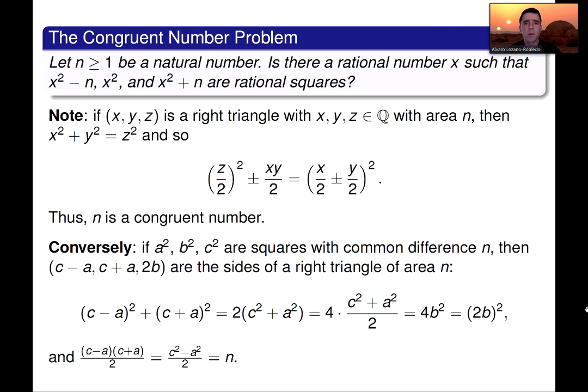More recently, though, we know the congruent number problem is a problem related to triangles, to right triangles, more precisely. And I just have this slide. I'm not going to go through it. But what it says is that if you have an arithmetic progression of three rational squares, then the common difference is a congruent number, and vice versa. So the common difference is what we define to be a congruent number, but you can construct a right triangle whose area is n. And, conversely, if you have a right triangle with area n, then you can come up with a difference of squares that gives you an arithmetic progression of squares with common difference n.